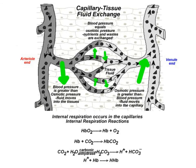First, oxygen has been carried to the tissues of the body in the form of oxyhemoglobin, which breaks down to release the oxygen molecules from the hemoglobin molecule. Oxygen is now free to diffuse across the cell membrane into the cells of the body to provide them with oxygen.